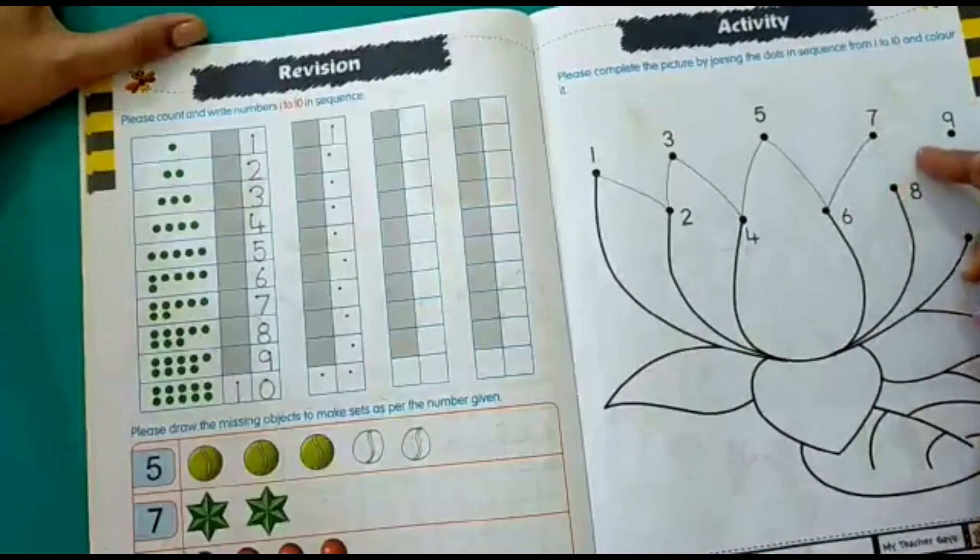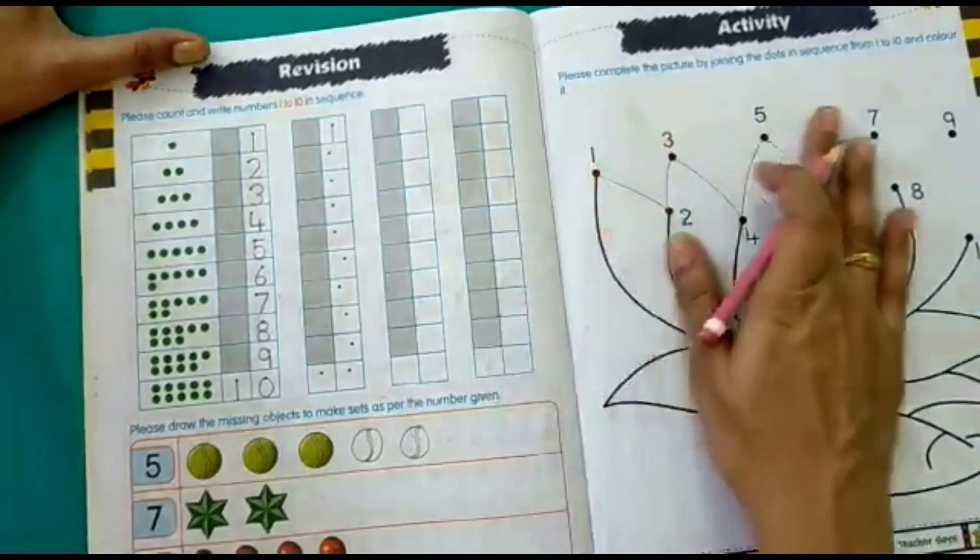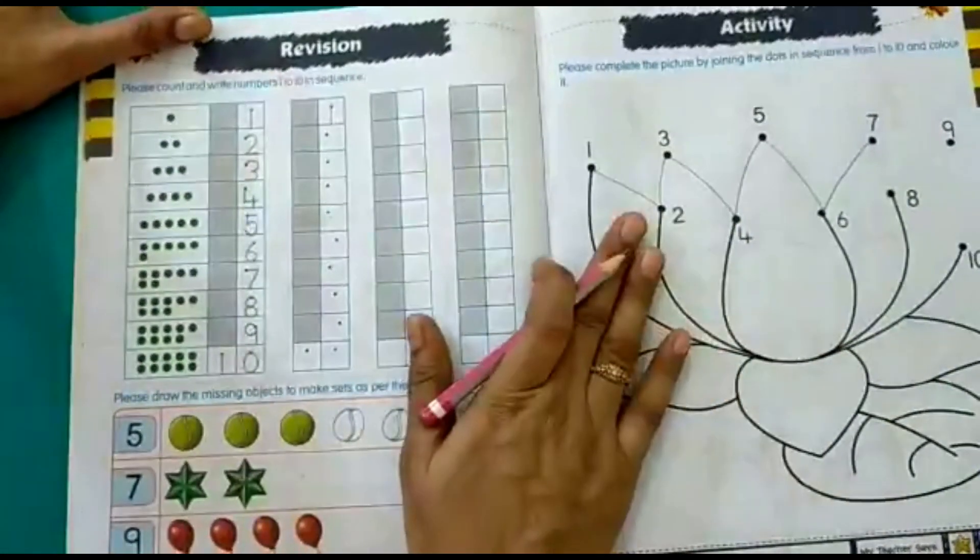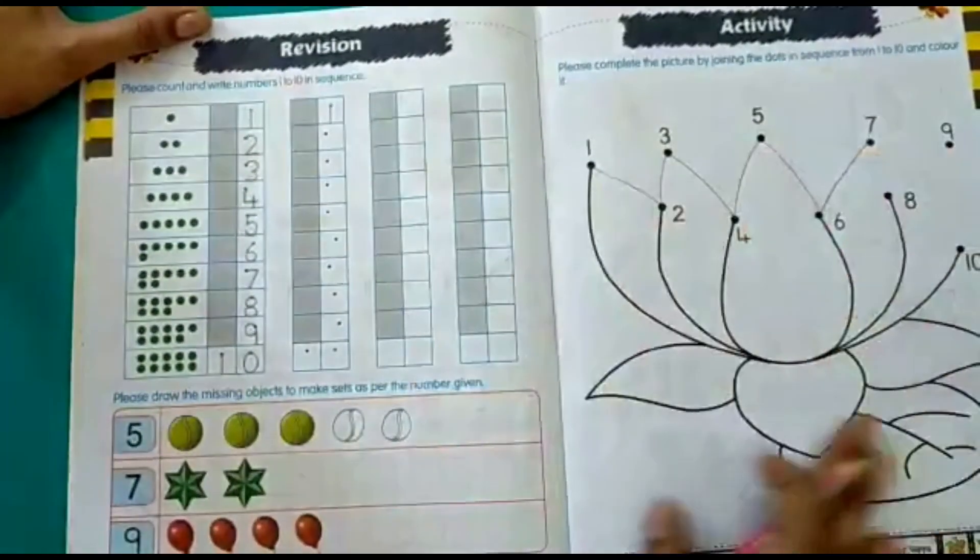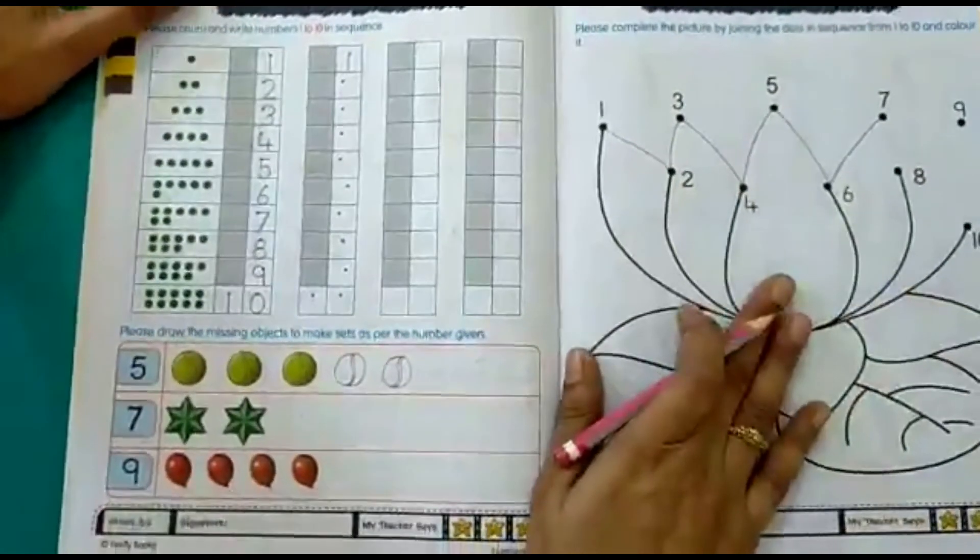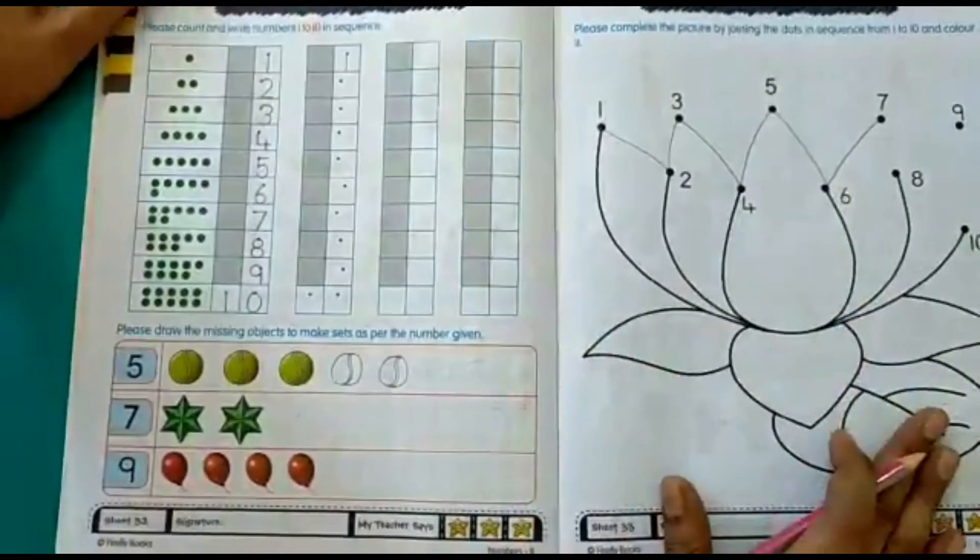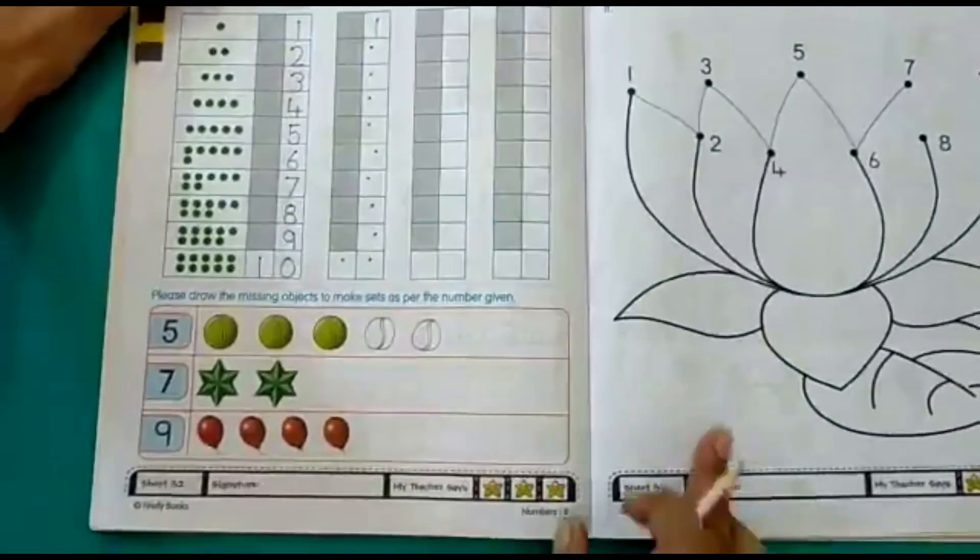In the same way, you have to join the dots and complete the picture. And then you have to colour it beautifully. What is this? This is a lotus flower. So you have to colour the lotus flower and the leaf here. So this is a fun activity for you.